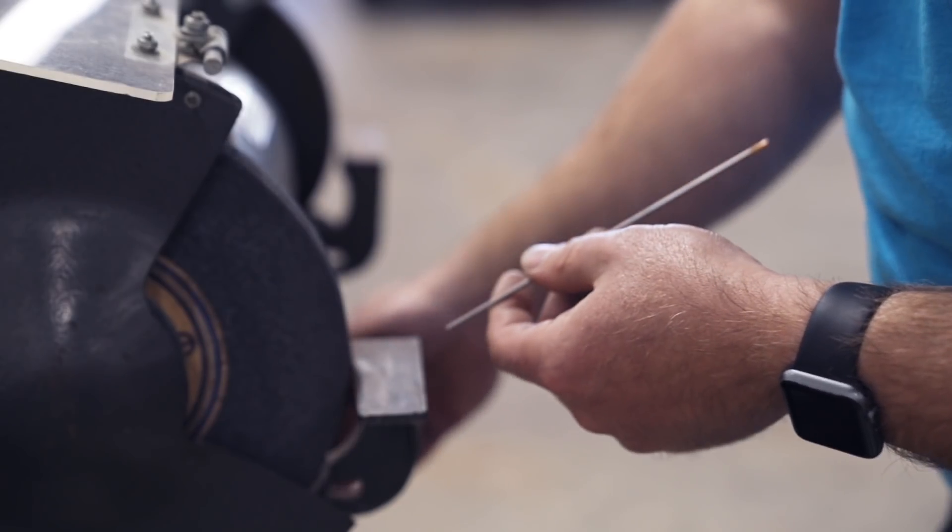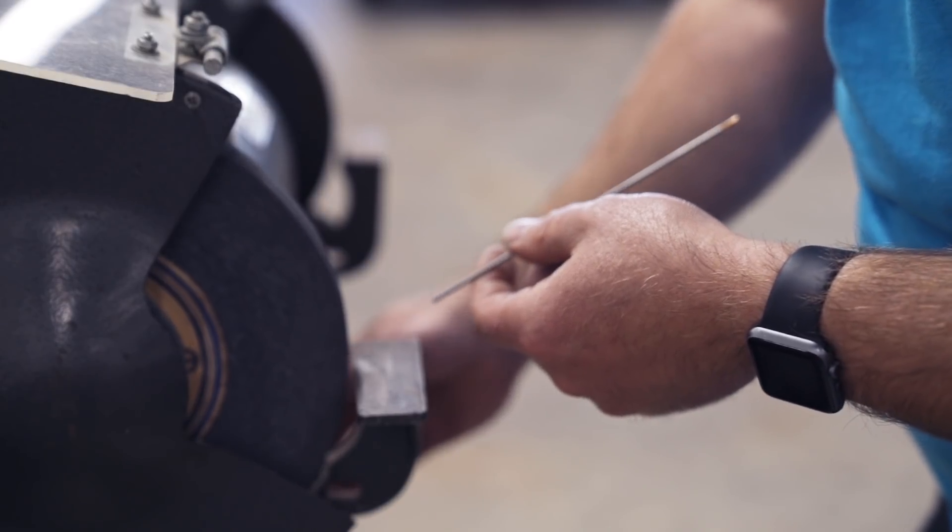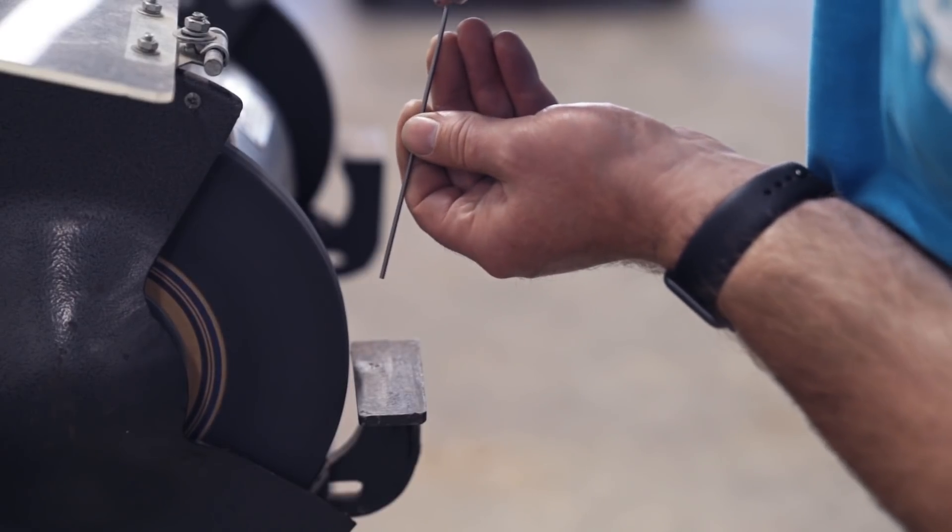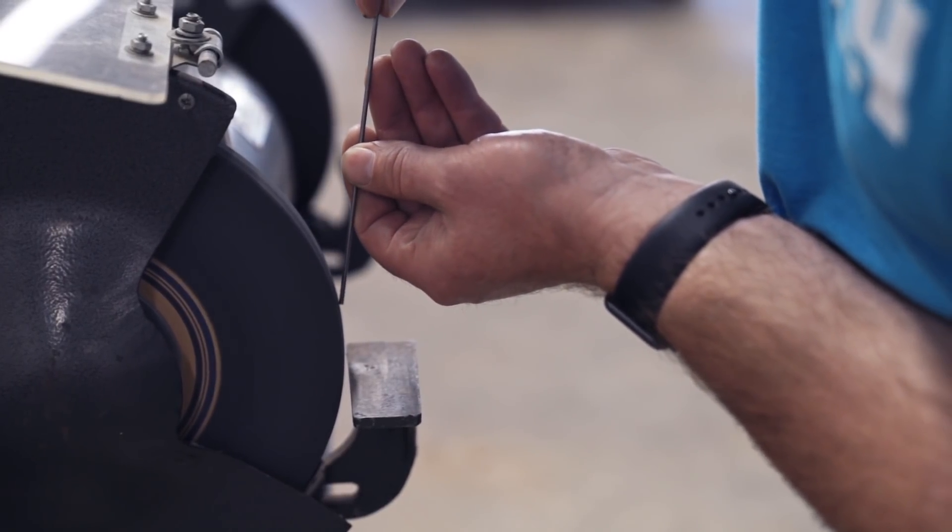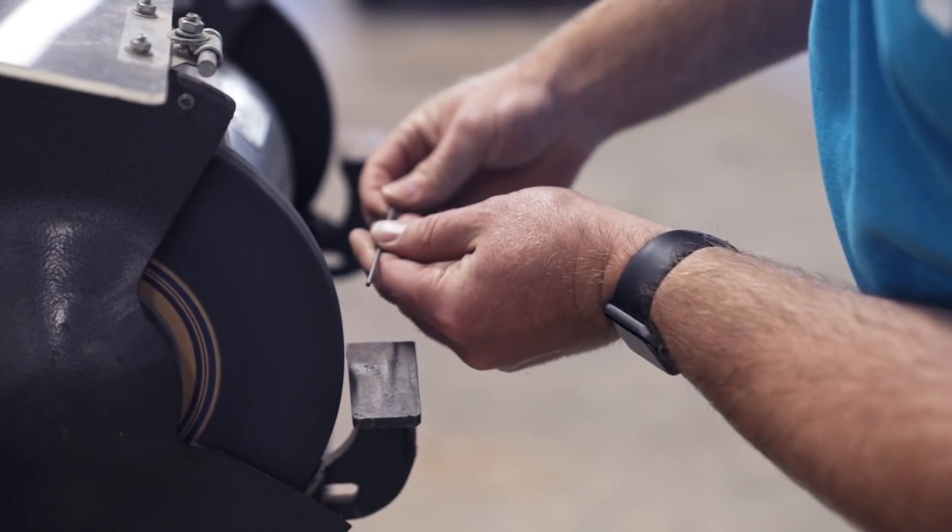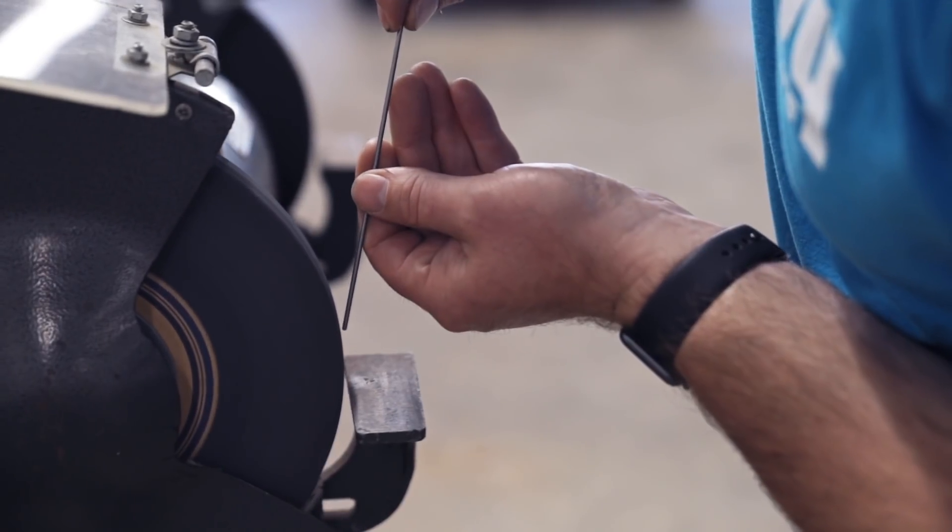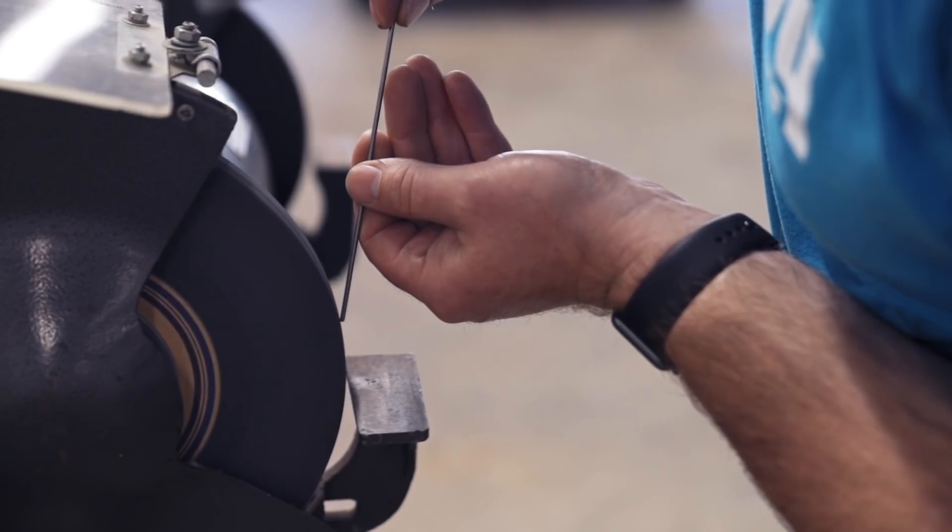Now the biggest thing is the way you hold your tungsten. Since my grinder spins this way, I want to hold my tungsten vertically pointing down the same direction that the grinder is spinning. I don't want to hold it like this, which would be putting grooves sideways. I want my grooves to go in the direction that my arc is going to be going.